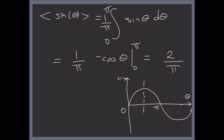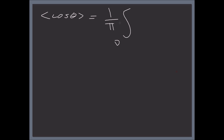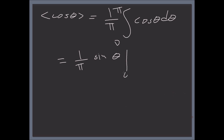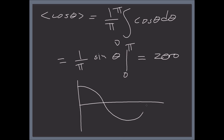The second part is finding the average of cos(θ). Same approach — integrate between 0 and π: (1/π) · cos(θ) dθ. Integrating gives (1/π) · sin(θ) from 0 to π, and you get 0. Visualizing the cosine curve, which goes from 1 down to −1 between 0 and π, averaging these two symmetric halves gives 0. No surprise.